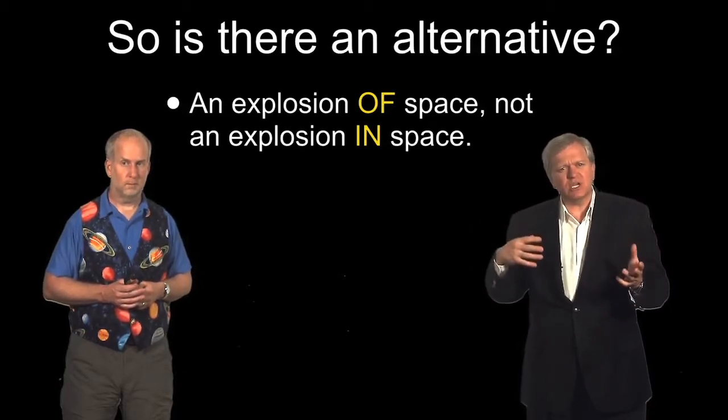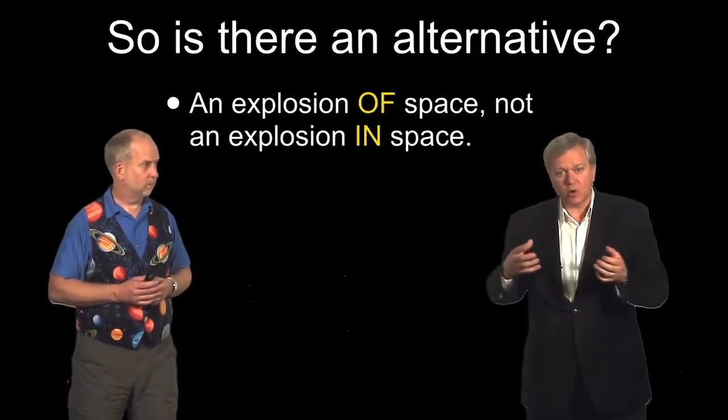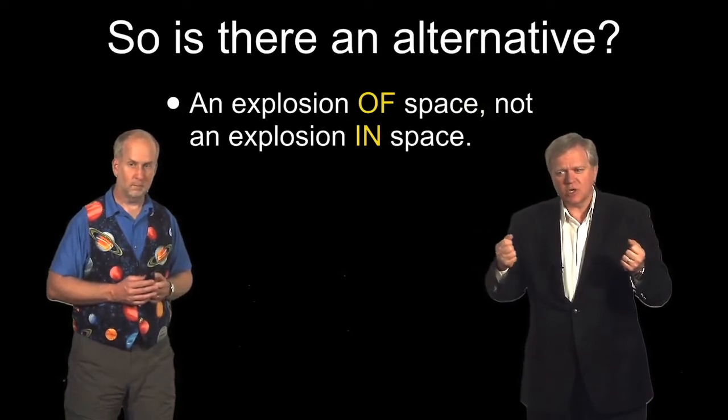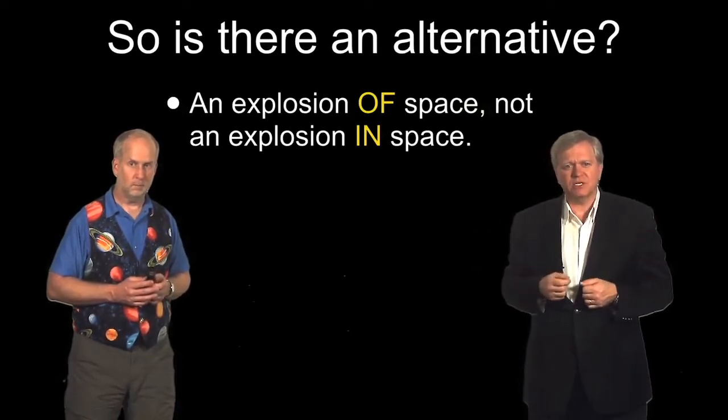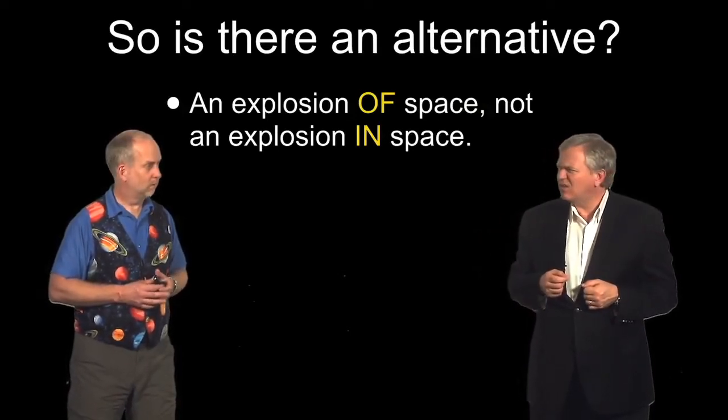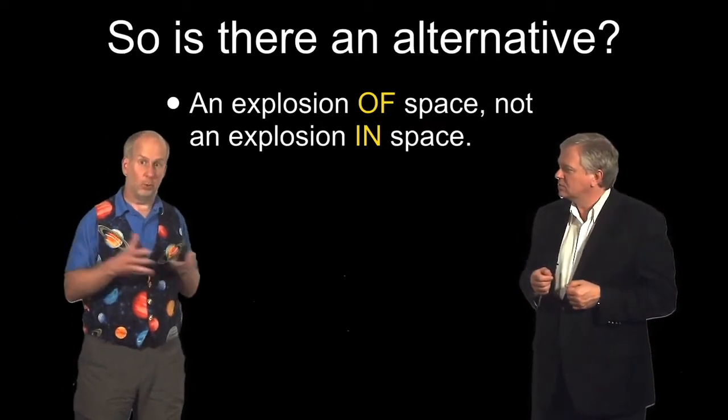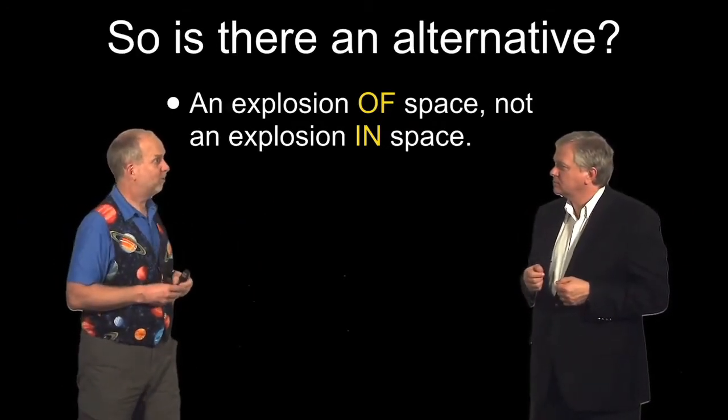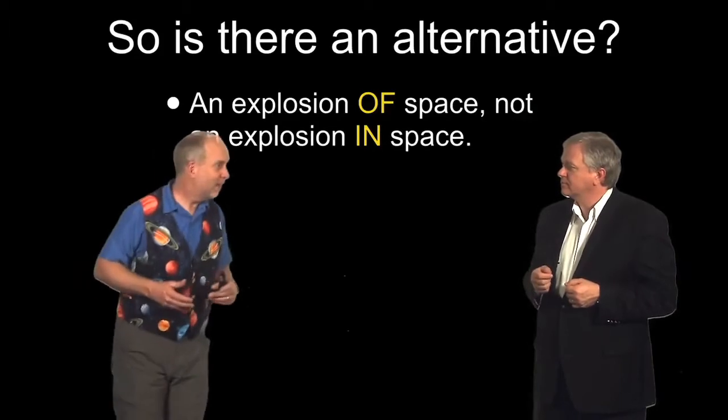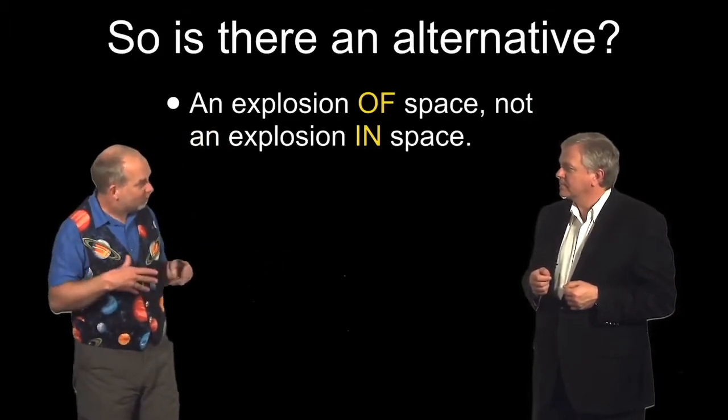And of course, since we judge everything in a relative sense, our rulers might be getting bigger. So how would we possibly observe this at all? I mean, if everything really was getting bigger or smaller, we could be doing it 100 times a second. The universe could be double, shrink, double, shrink. We wouldn't even notice, because we'd be doubling and shrinking at the same time.